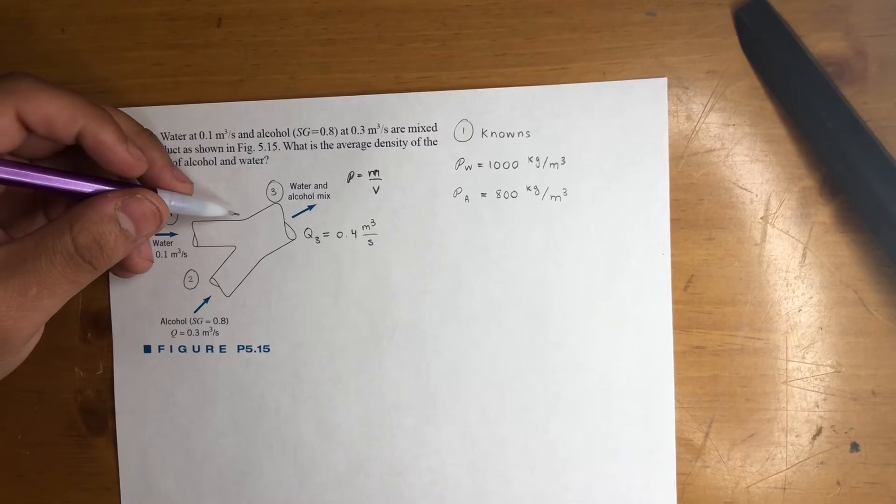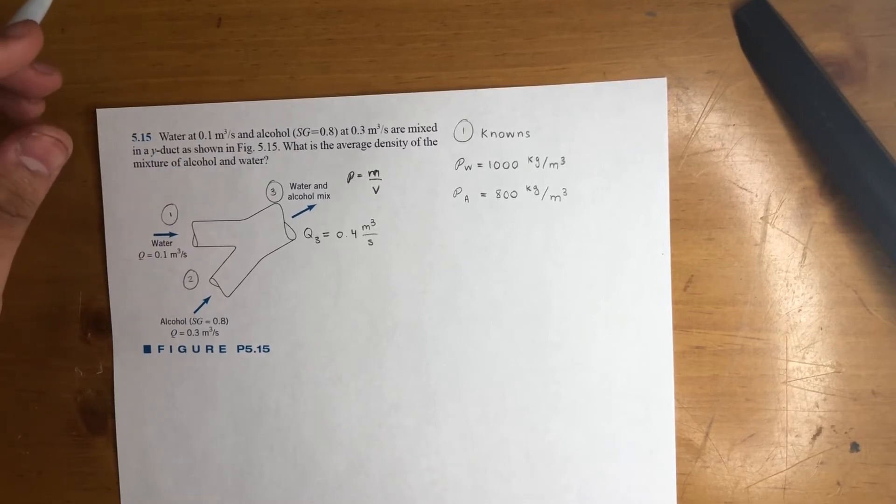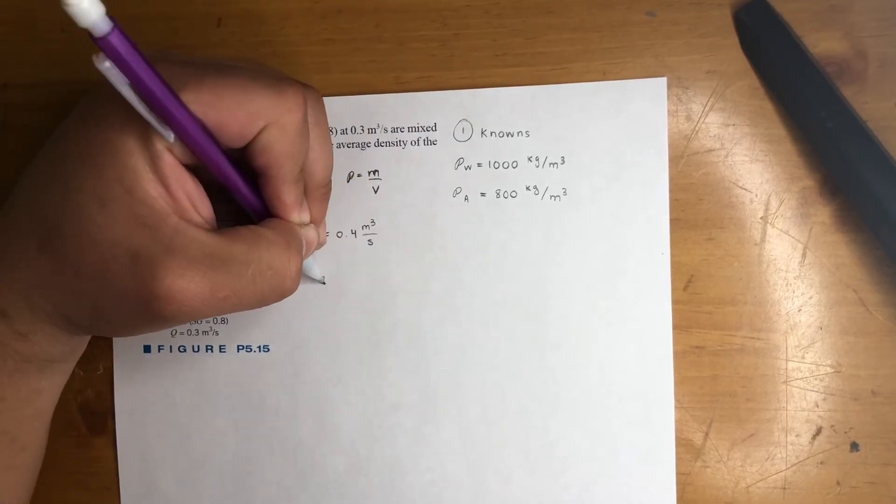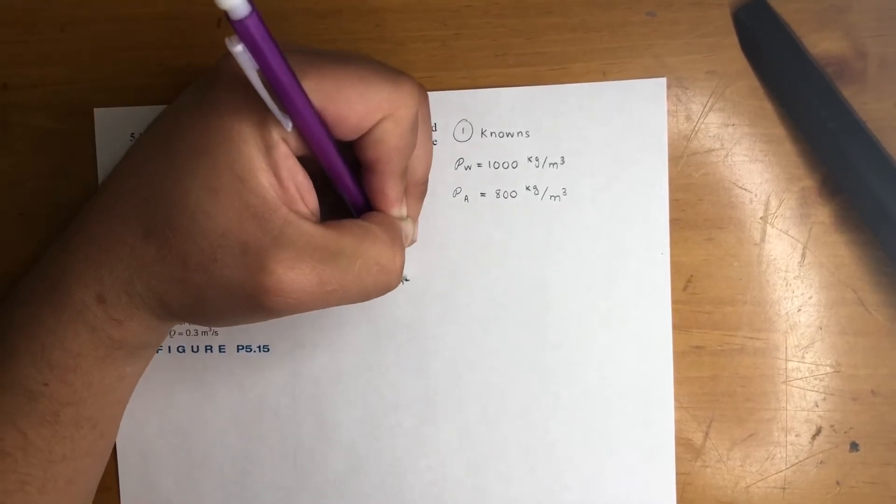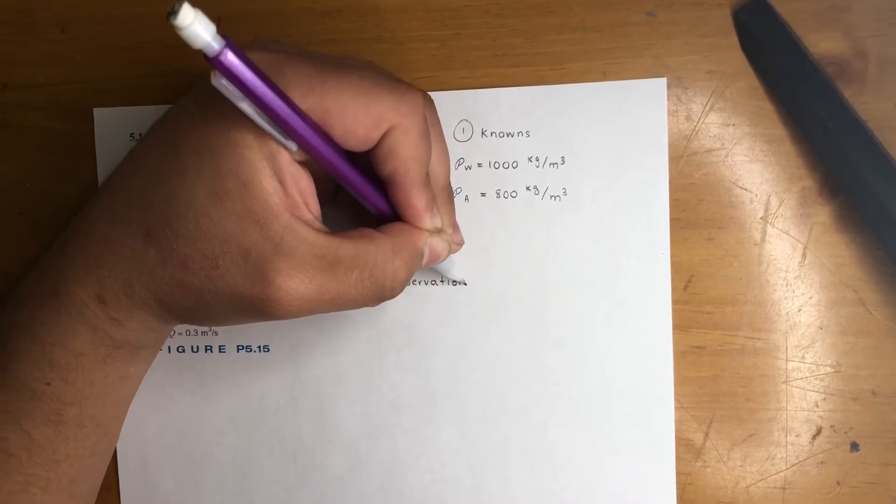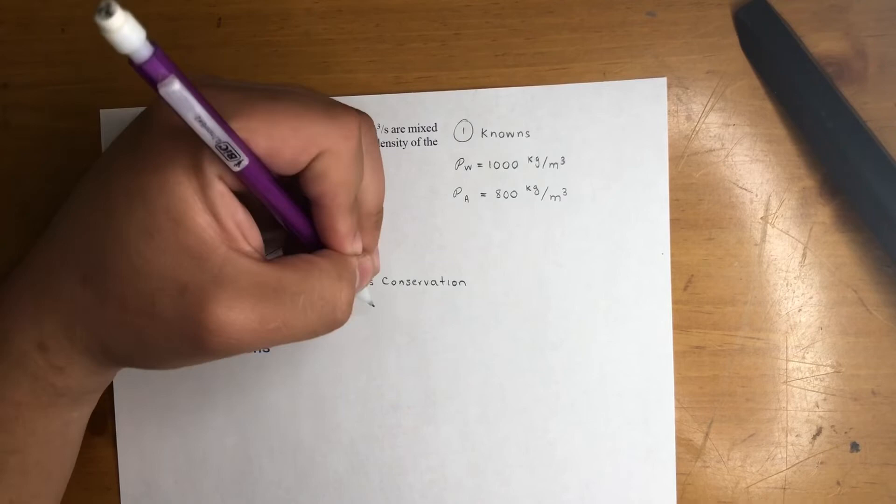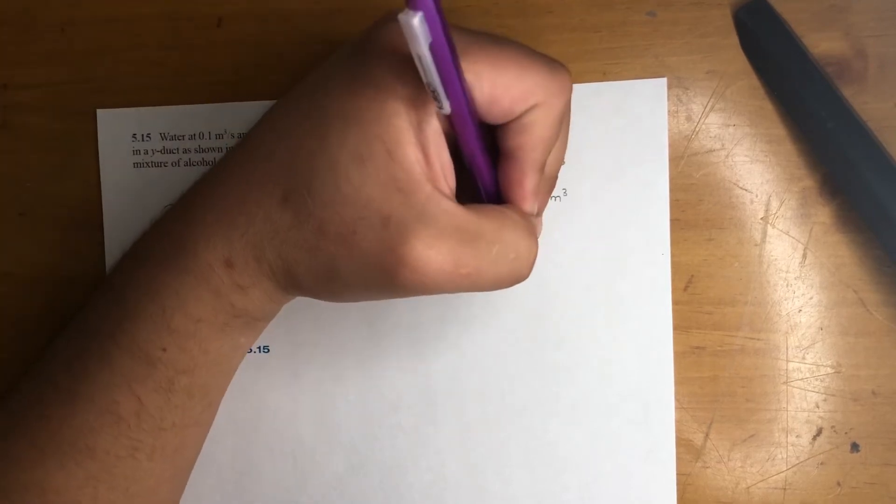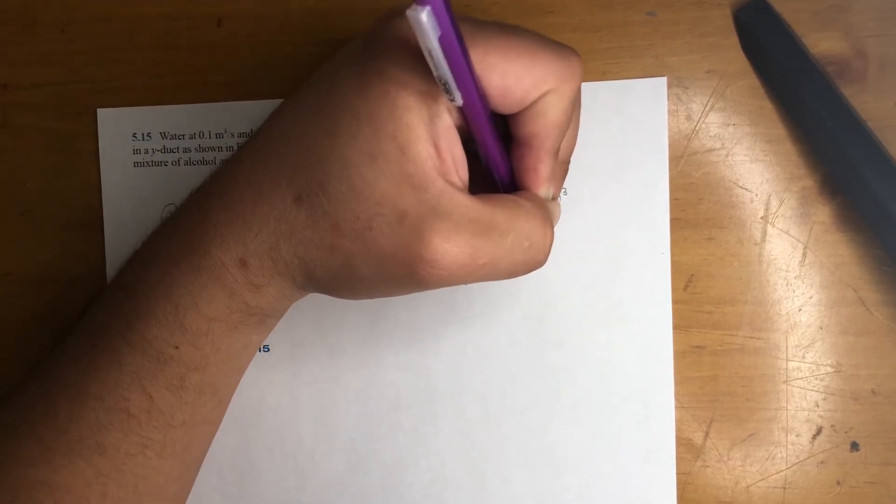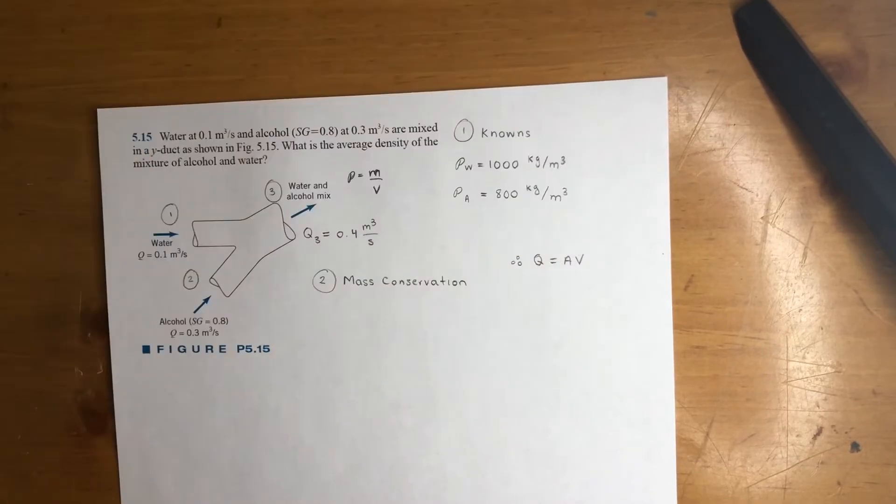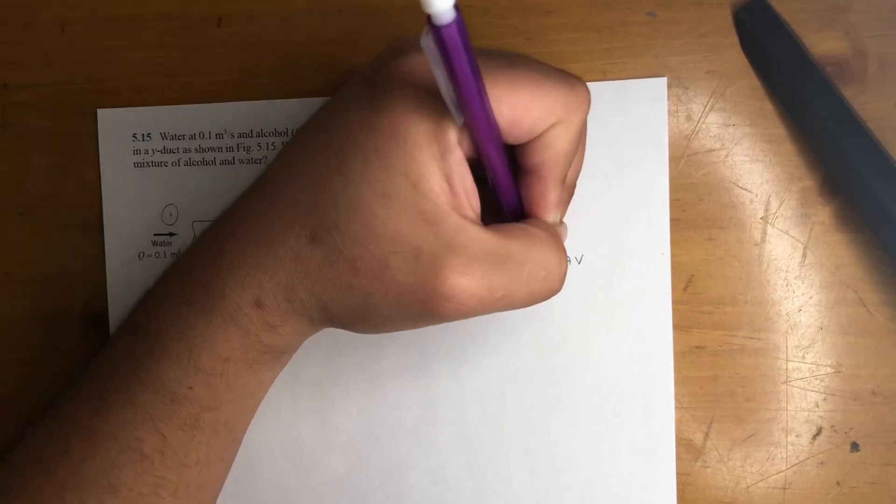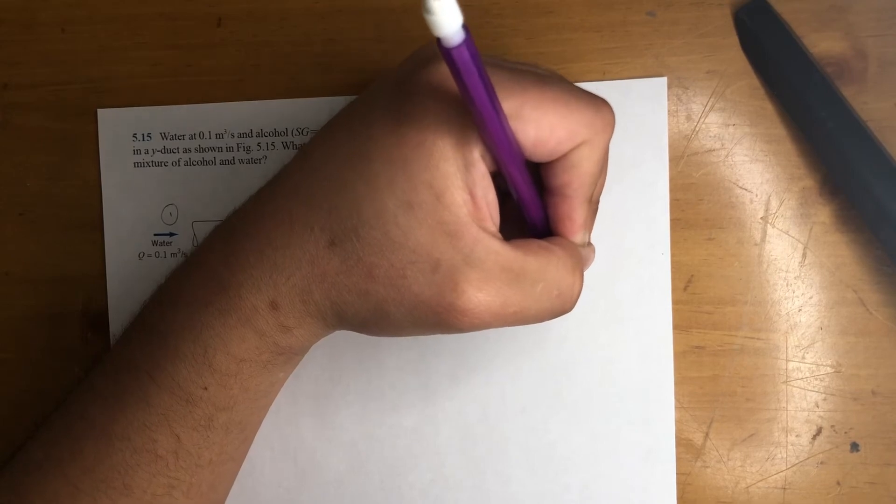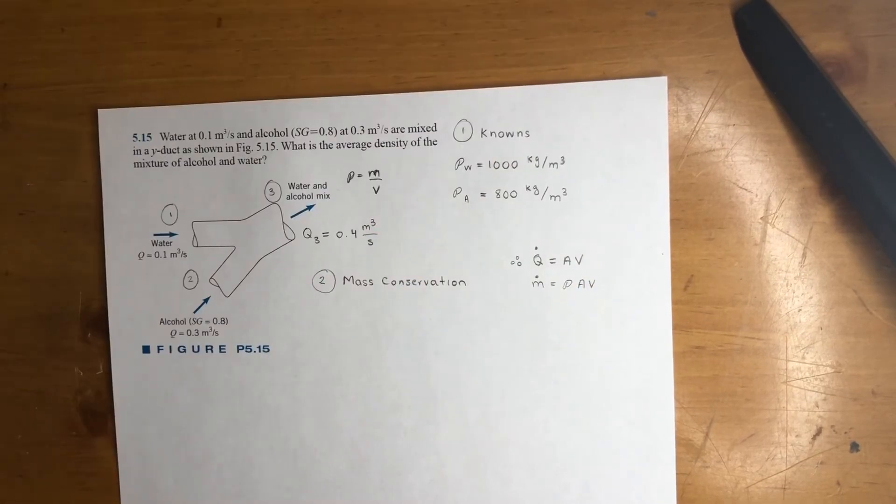Alright, cool. So we know mass is also conserved. That's kind of the whole point of this topic here, mass conservation. So we go ahead, second step, write mass conservation. So to get flow rate, it's, I'll write it right here. Flow rate is equal to area times velocity. To get a mass flow rate, you just multiply it by the density, rho av. That's pretty much it.